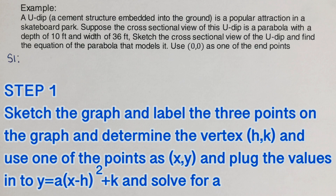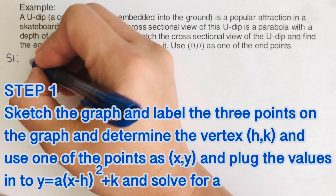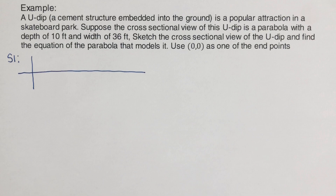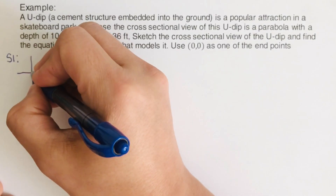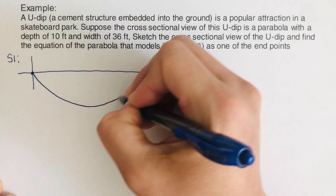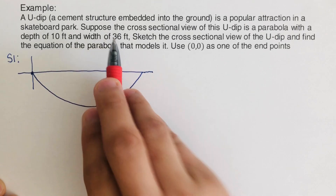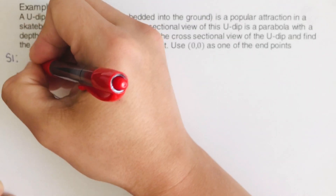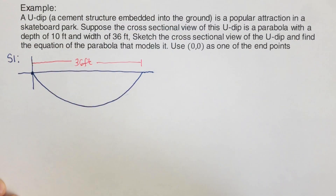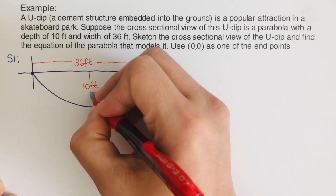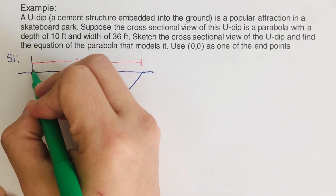We start with Step 1: sketch the graph, label the three points, determine the vertex (h, k), use (0, 0) as (x, y), and plug the values into the vertex form to solve for a. We draw the x and y axes. The U-dip is a parabola that opens upward. The width is 36 feet and the depth is 10 feet, which we label on the diagram.